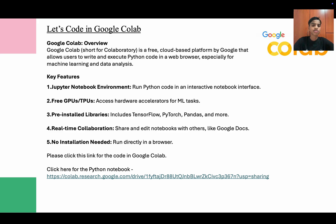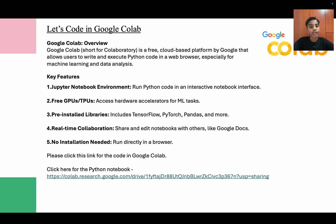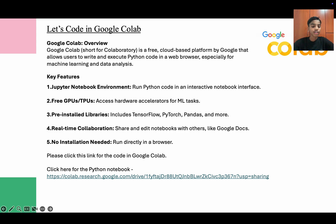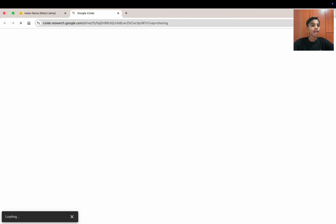Google Colab, short for Collaborative, is a free cloud-based platform by Google that allows users to write and execute Python code in a web browser, especially for ML and data analysis. Key features include a Jupyter Notebook environment, free GPUs and TPUs, pre-installed libraries, real-time collaboration, and — most importantly — no installation required. You can just run it directly in the browser. Click the link in the comments to open our Google Colab notebook.